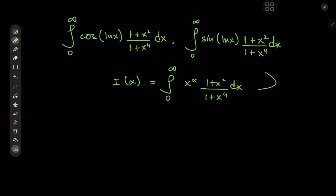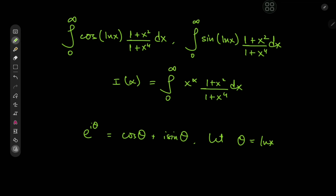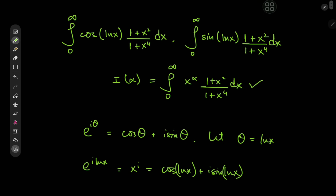Now how exactly did this integral lead to these two integrals? Recall from Euler's beautiful formula that we have e to the iθ equal to cosine θ plus i times the sine of θ. So if I let θ equal to log x, then e to the i times log x equals x to the i, and this gives us cosine log x plus i times the sine of log x. So all I have to do is figure out what this integral function gives in terms of the alpha parameter, and plug in α equal to i.